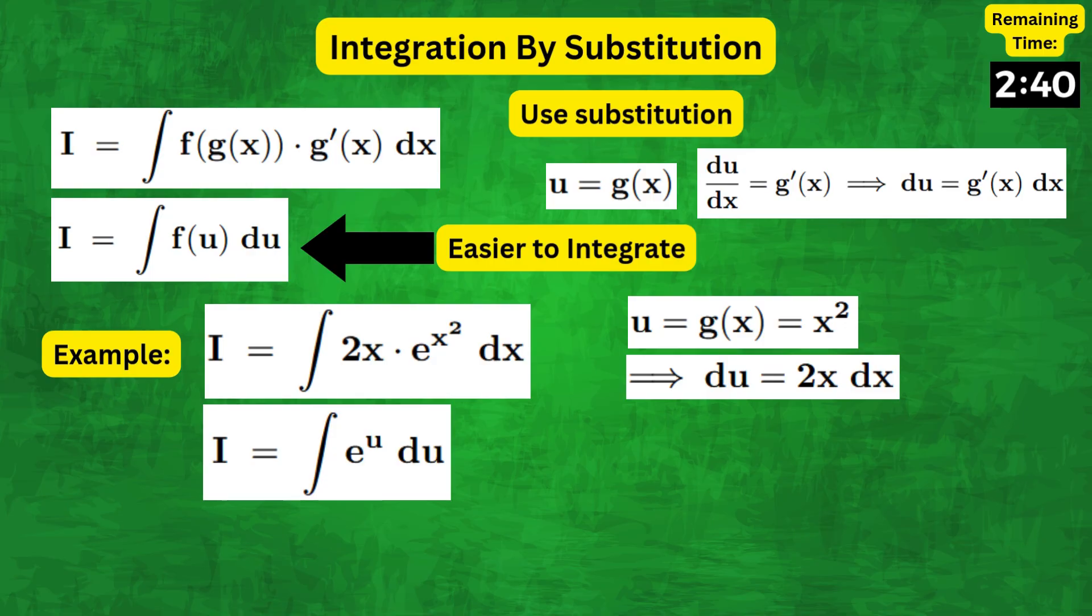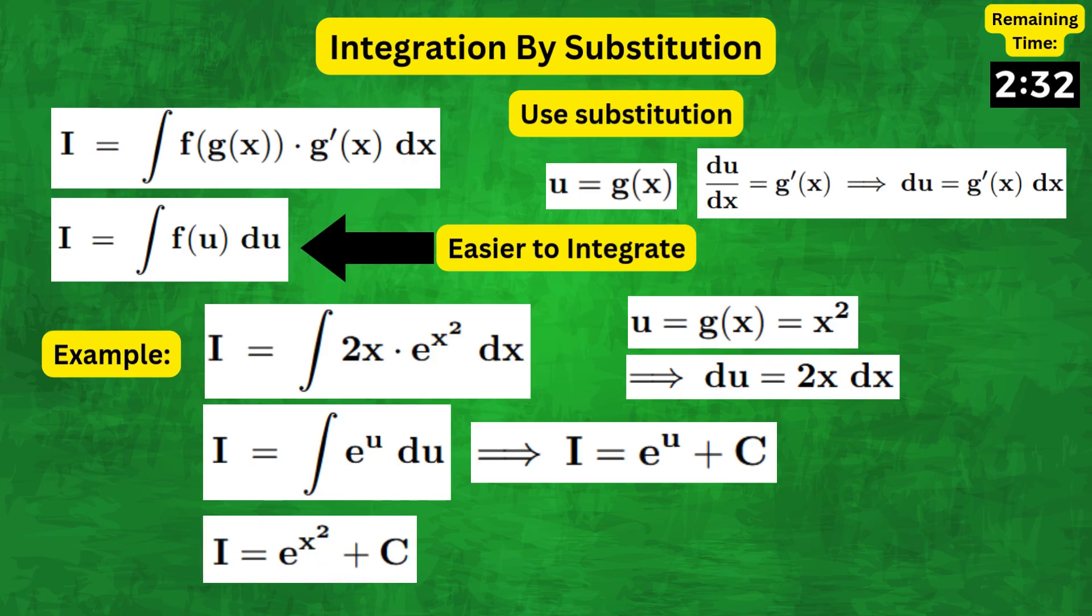Therefore the integral becomes e to the u du, which integrates out to e to the u plus C. And subbing u equals x squared back in, we get e to the x squared plus C, which is the answer. See how easy the problem became with the right substitution?